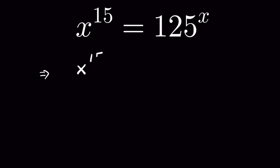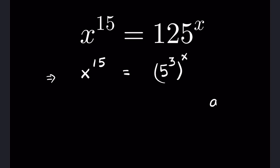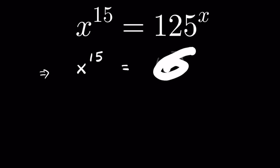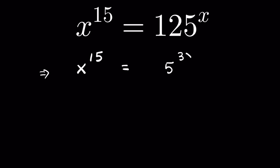x raised to the power 15 is equal to 125, which we can write as 5 raised to the power 3, then whole raised to the power x. This is in the form of A raised to the power m, whole raised to the power n, which equals A raised to the power m times n. So this will be equal to 5 raised to the power 3x.